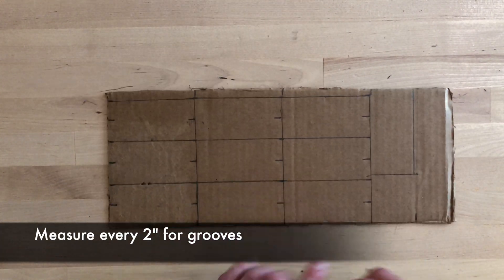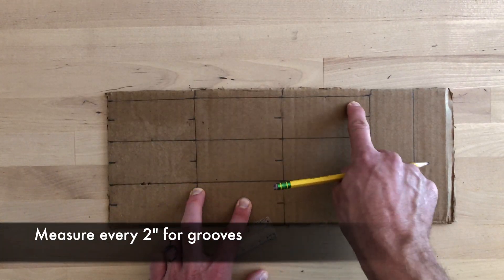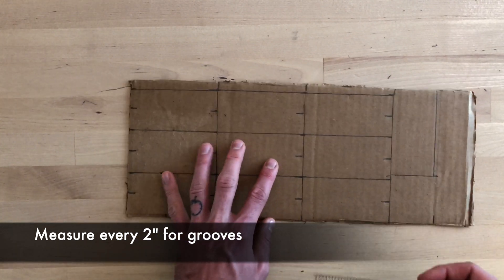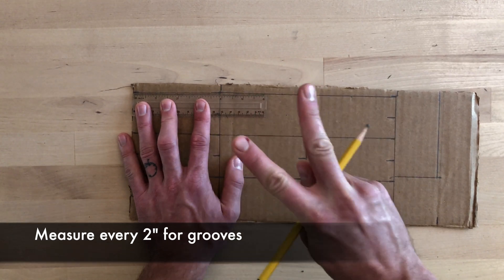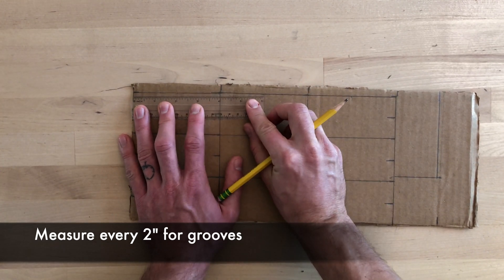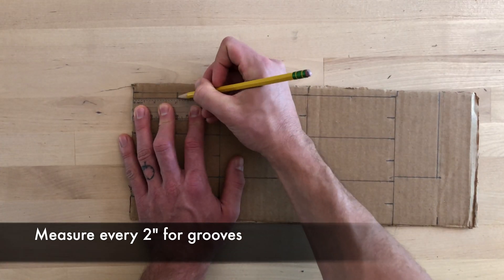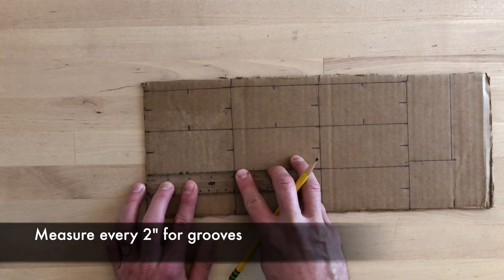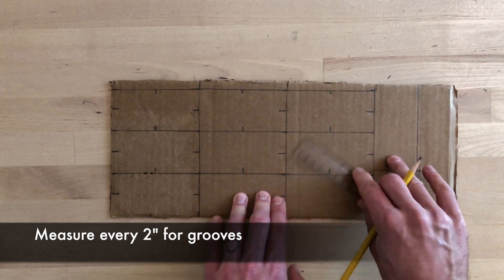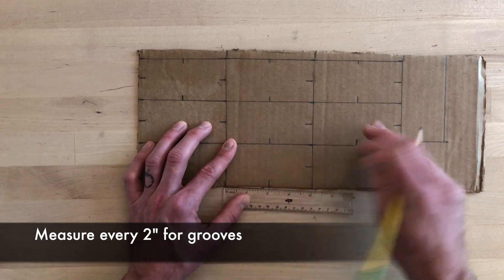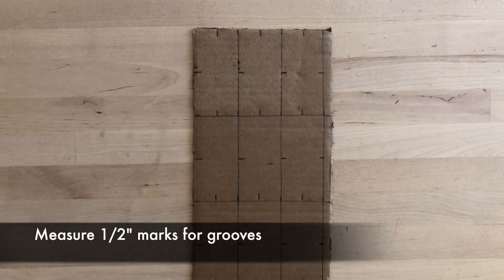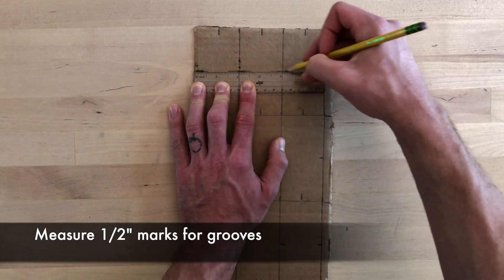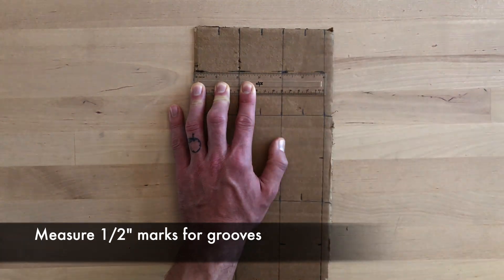Now it's time to measure our two inch grooves on the four inch side of our constructor. Each groove needs to be a half inch long. Keep your ruler in place and measure a half inch at each spot.